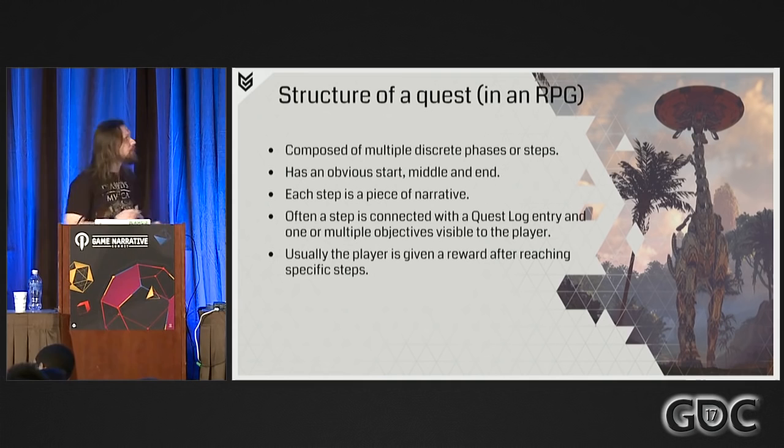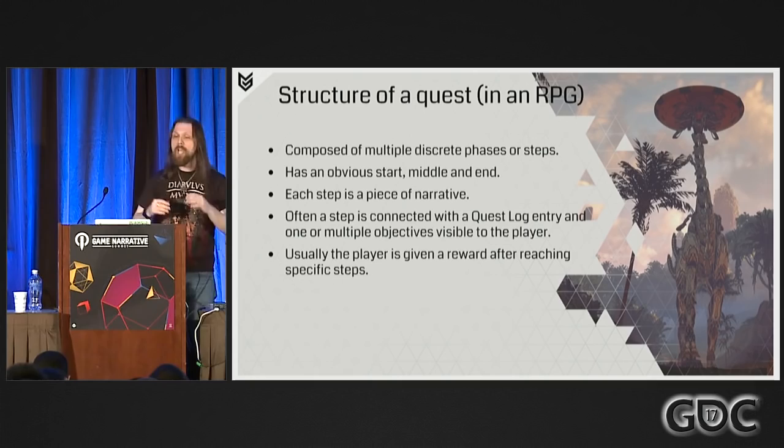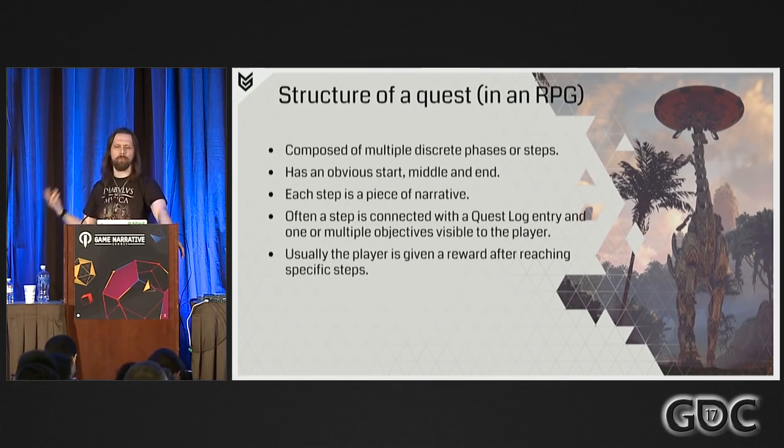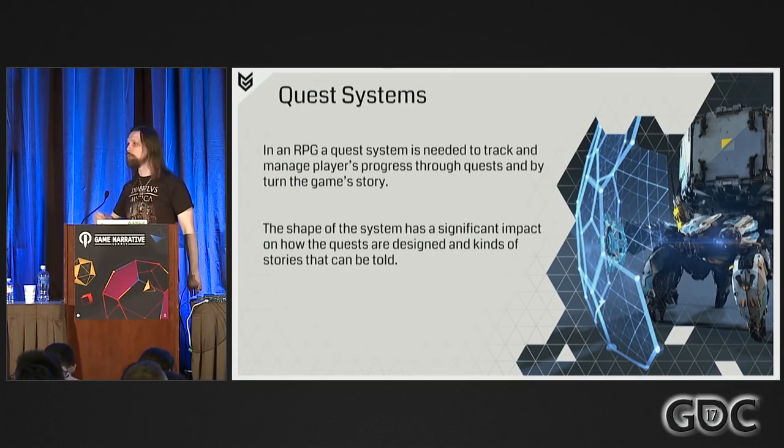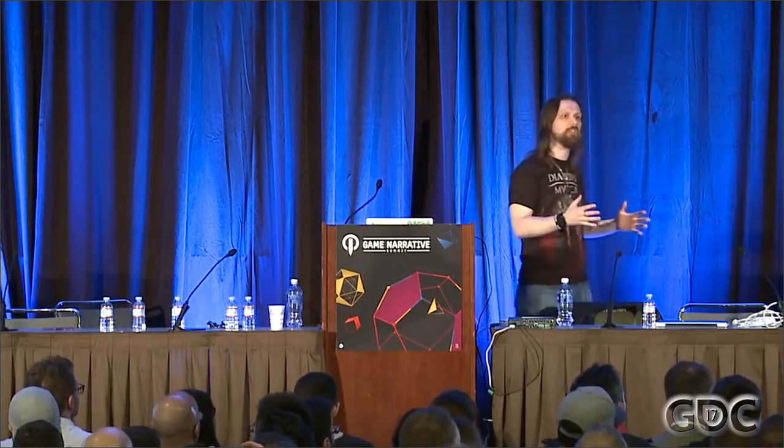To discuss this topic, let's have a quick look at the structure of a typical quest. Quests are usually composed of multiple discrete phases or steps, following a typical structure with an obvious start, middle, and end. Each step can be considered a single piece of a greater quest narrative. Often, a step is connected with a quest log entry which informs the player about their progress. Also, a quest step can be connected to one or multiple objectives which inform the player about the tasks at hand. Progressing through a quest usually yields some sort of reward with tangible value in the context of the game.